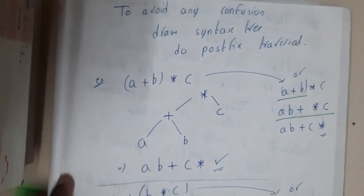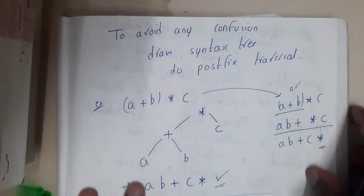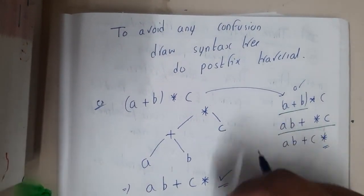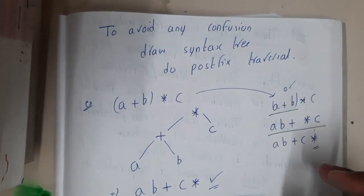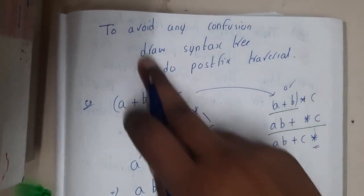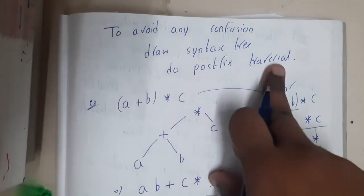Whenever you want to calculate it, you can draw the syntax tree and you can perform the post-order traversal. To avoid any confusion, draw the syntax tree and do postfix traversal. That will work.